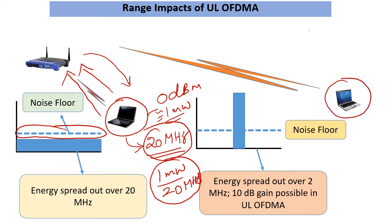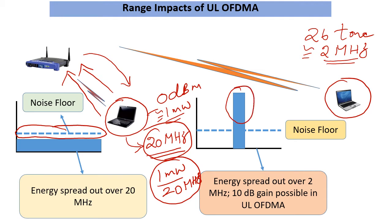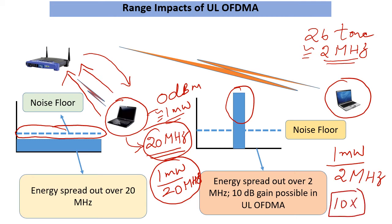How does OFDMA help with this? With OFDMA we can engage in 26-tone transmission — that's the smallest allocation, which is approximately 2 MHz bandwidth. This helps us primarily because we are able to boost our power spectral density over the 2 MHz, simply by the fact that our 1 milliwatt instead of being shared over 20 MHz now gets shared over 2 MHz. That's a factor of 10 improvement — 10x power improvement, or 10 dB on the logarithmic scale. This is the key point for range potential with uplink OFDMA, and it also helps in downlink traffic scenarios where you need to cover some uplink actions.